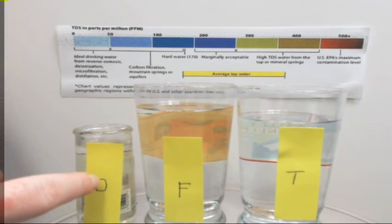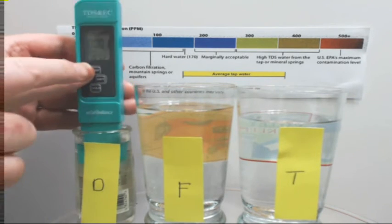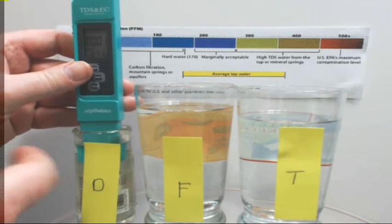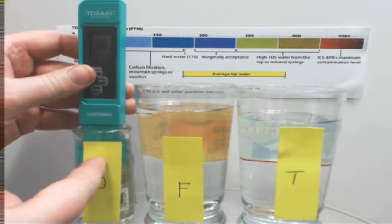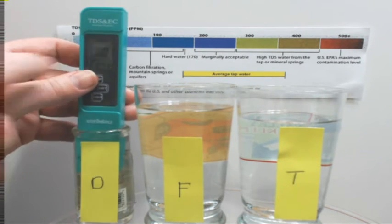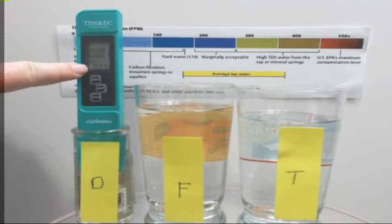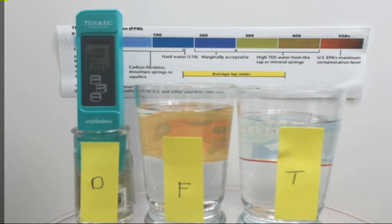Then this last one is distilled water, which distilled water should be at zero. This is one. We probably just have a little bit of contaminated water on the electrodes. If I swish it around, it'll go back down to zero eventually. But all these three also registered at the same room temperature, which is 71 degrees right now.